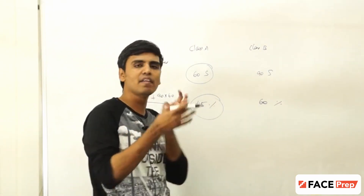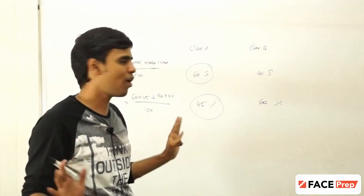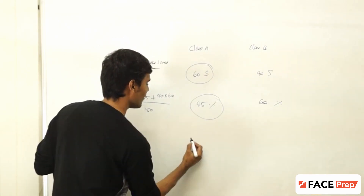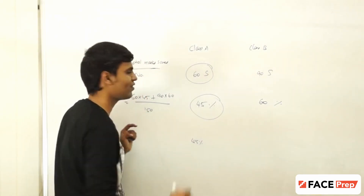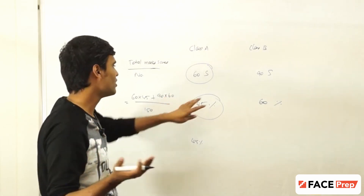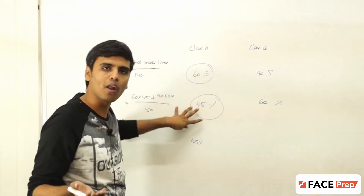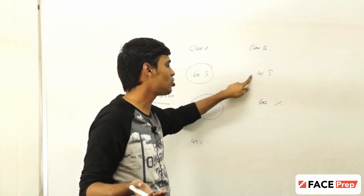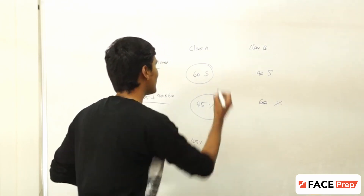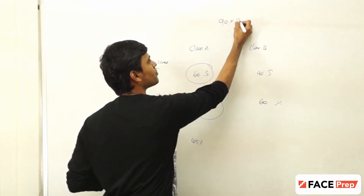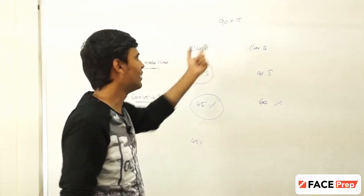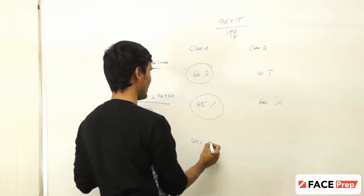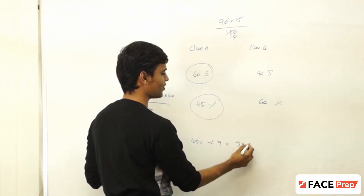Similarly, in class B, I will assume that everyone has 60 percentage. If we use the deviations method — like the chocolates analogy — these 60 students already have 45, and these 90 students also have 45 as a base, but these 90 students have 15 extra. So the extra amount is 90 into 15, and that has to be distributed amongst 150 people. So I just need to add, and 54 is the answer.